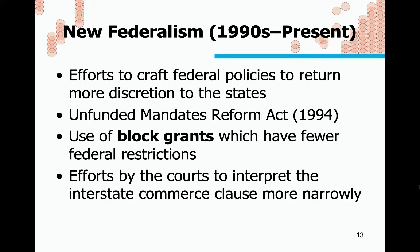The last period to discuss is new federalism, which really kicked off in 1994 when Republicans took over the House and were keen on returning more discretion and power to the states. Unfunded mandates were made illegal by federal law. Instead of grants in aid, we've seen a rise in the use of block grants — basically a pot of money the federal government gives to states with far fewer strings attached. There have also been efforts by the courts to interpret the interstate commerce clause more narrowly to limit what the federal government can dictate to the states.